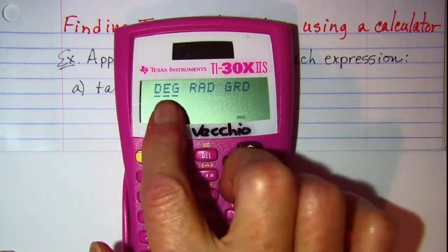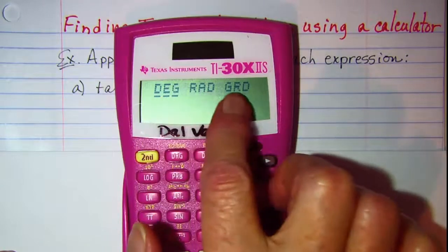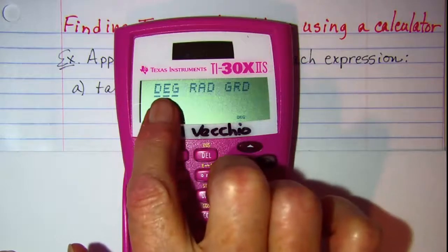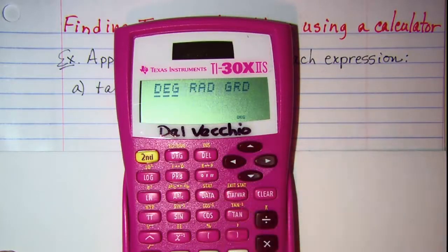I can pick either degrees, radians, or grads. And if it's not degrees underlined, you need to change it to degrees.